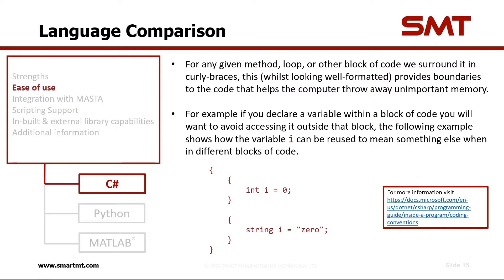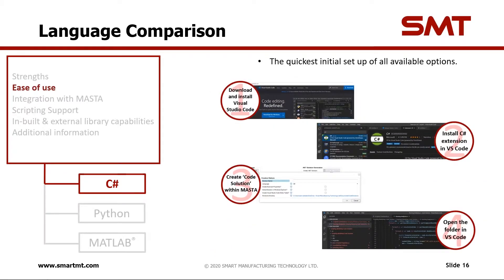Here's an example. If you declare a variable within a block of code, you want to avoid accessing it outside of that block. So as you can see, the first variable 'i' is an integer and is assigned a value of zero. In the second block, there's a variable 'i' that is a string assigned the value 'zero'. But outside of either of those curly braces, 'i' doesn't exist at all. At the moment, C# has probably the quickest initial setup because of the support provided — simply download Visual Studio Code, install the C# extension, click that button in MASTA, and then open the folder in Visual Studio Code.